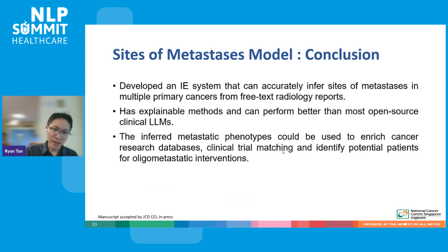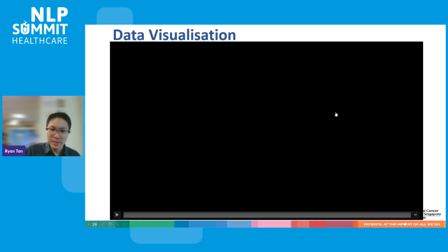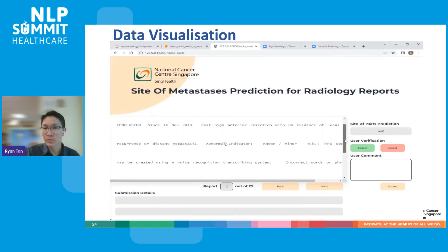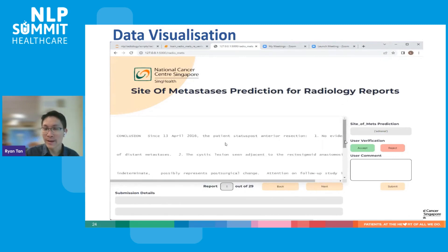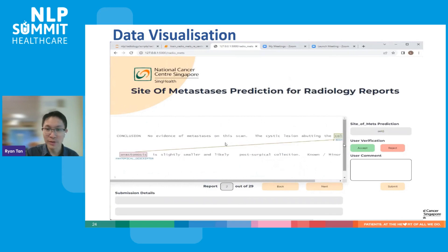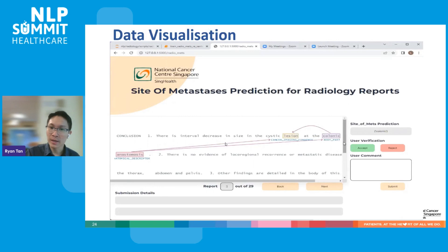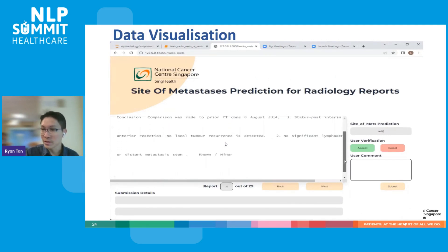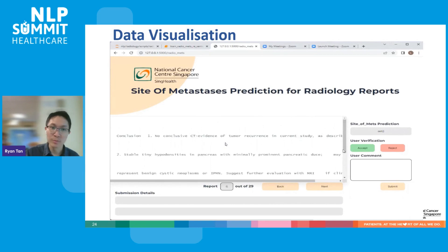We then used these variables to enrich our cancer research databases, and also used them as a module in the clinical trial matching pipeline and to identify potential patients for oligometastatic interventions. This is an example of a UI interface we developed for these models. For research, we thought it was important to have a human in the loop to verify some of these, and in our trainings we also used this for ground truth annotations. Users can see what Spark NLP visualizes and choose to accept or reject, adding a comment as to whether they agree or disagree. Iteratively, we can use this to improve the models with larger training sets.